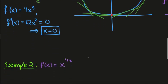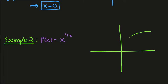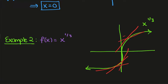Let's look at another example: f(x) = x^(1/3). The graph of this function is the inverse of the cubic function, so it looks something like this. Looking at the tangent lines, here they're below and then here they're above. So we should expect a point of inflection around x equals 0.